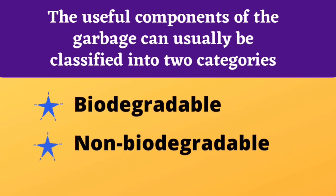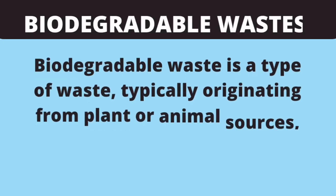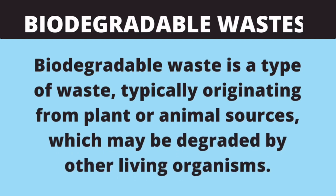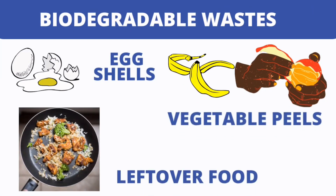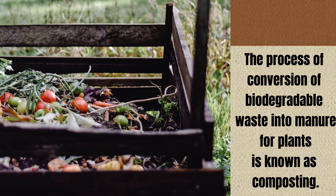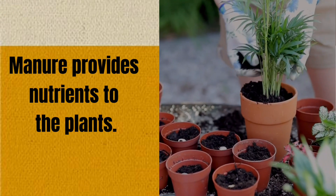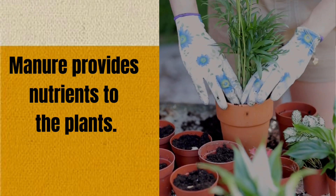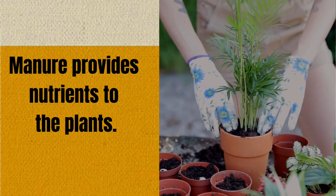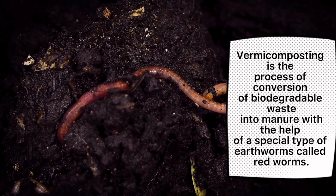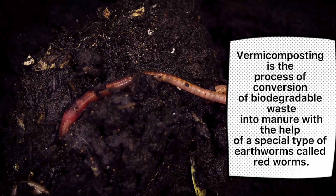The useful component of garbage can be broadly divided into two categories: biodegradable waste and non-biodegradable waste. Biodegradable waste is also called moist waste. It is typically originated from plant or animal sources and can be easily decomposed into simpler forms by microorganisms. Vegetable and fruit peels, eggshells, leftover food, and sewage are a few examples. Over a period of time, microorganisms convert biodegradable waste into simpler organic matter called manure, which can be mixed into soil as a nutrient for plants.